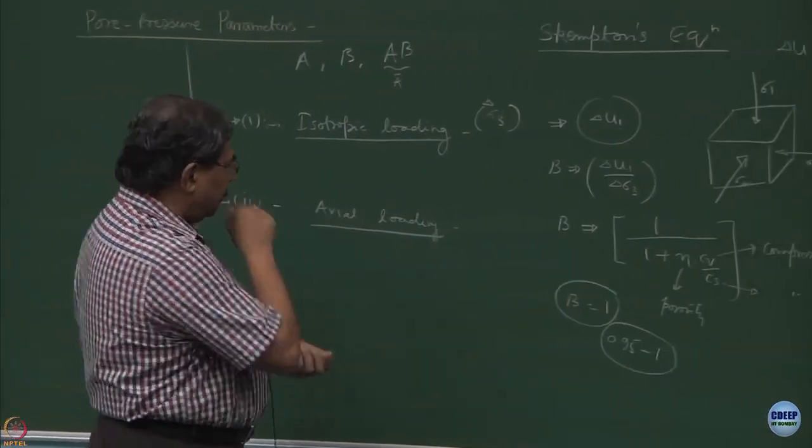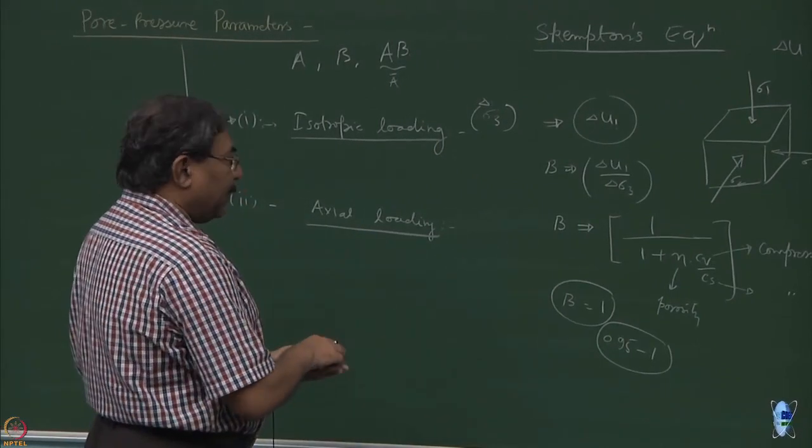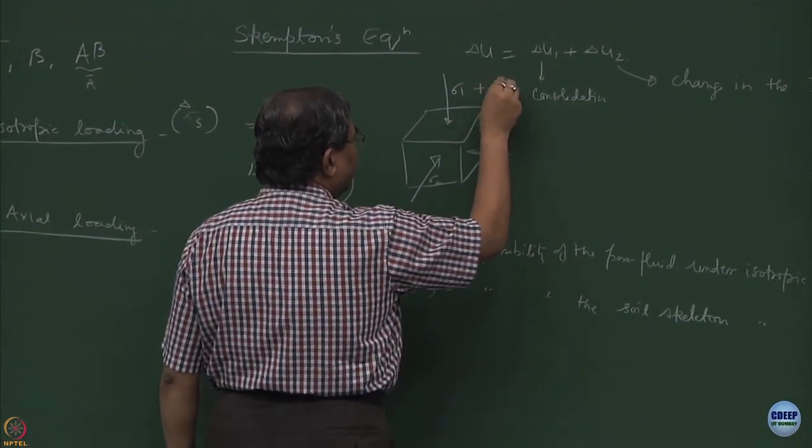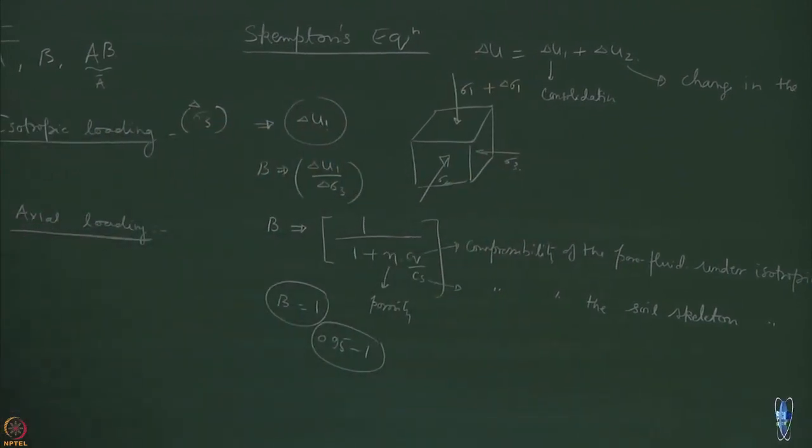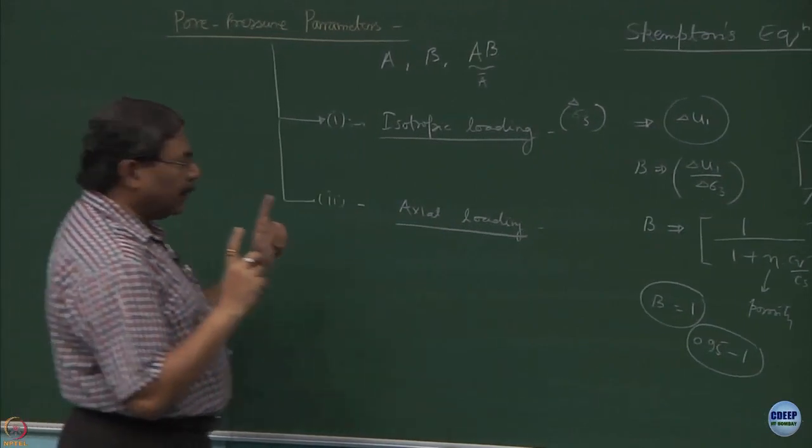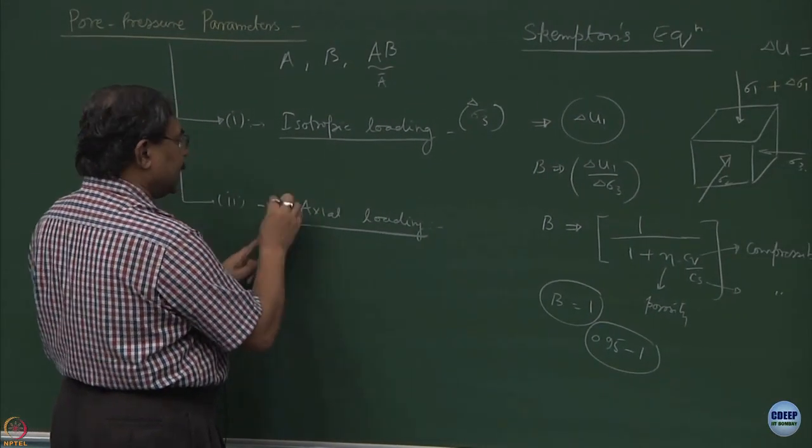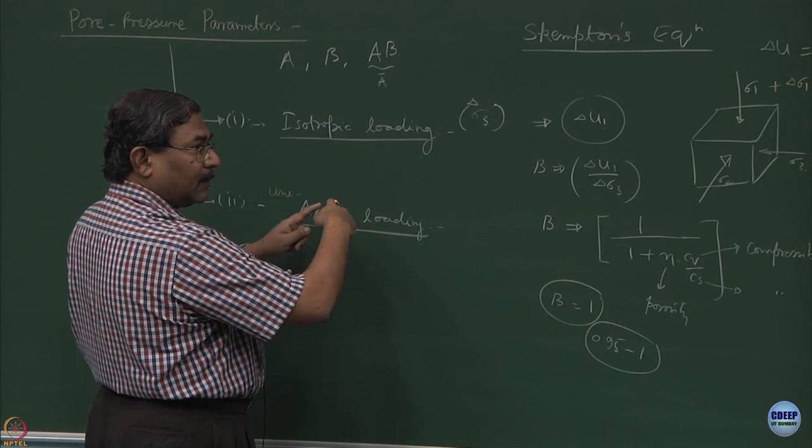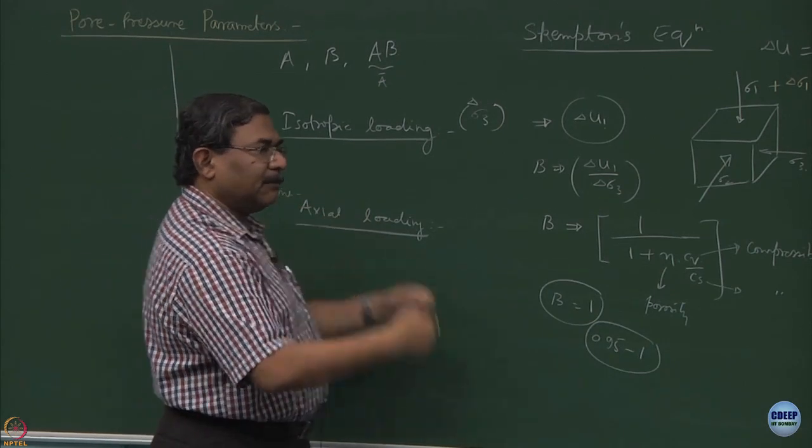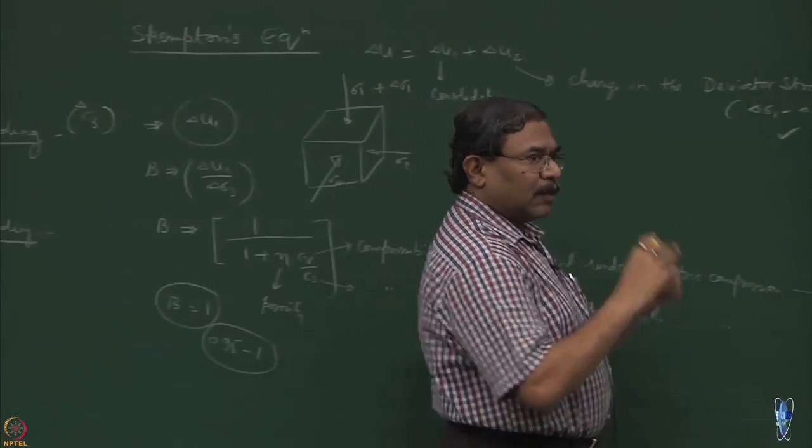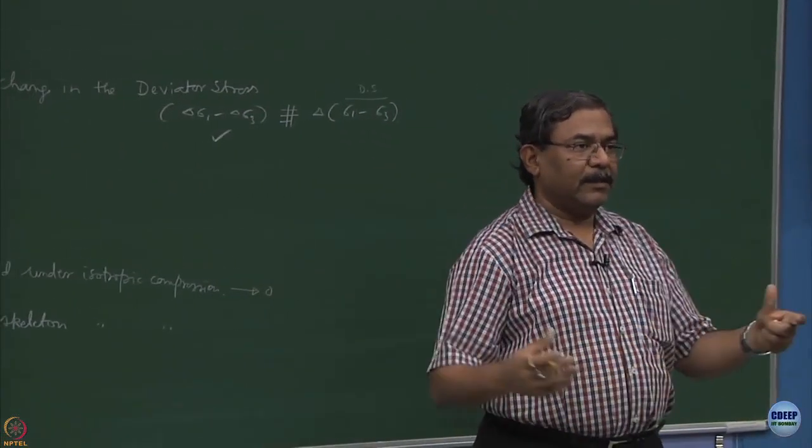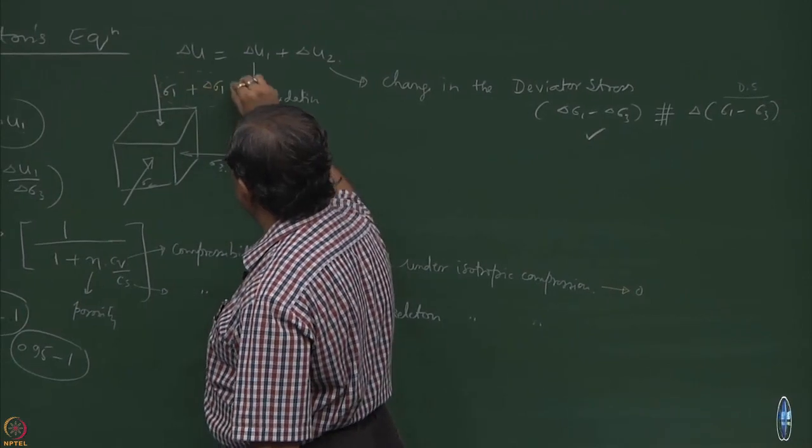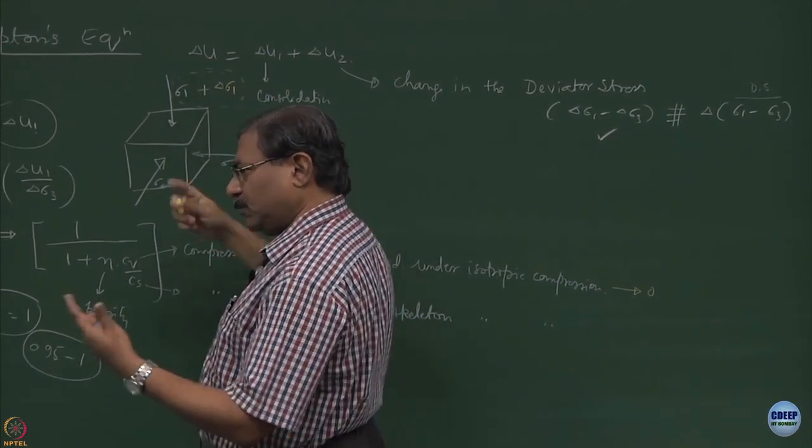Now, the A parameter is something different. Now, A parameter comes in the picture when let us say I apply an incremental change in sigma 1 itself, uniaxial. So, it is understood that this is uniaxial and this condition occurs when you are shearing the sample, because sigma 3 is kept constant. Remember changing sigma 3 is not an easy task. Once you have consolidated the sample at sigma 3 you try to shear it by changing sigma d value or sigma 1 value. So, this is what is going to cause the shearing of the sample, delta sigma 1 which is equal to sigma d.